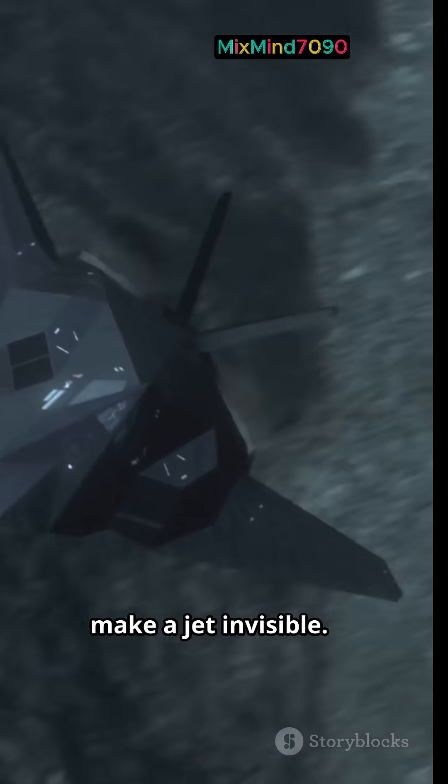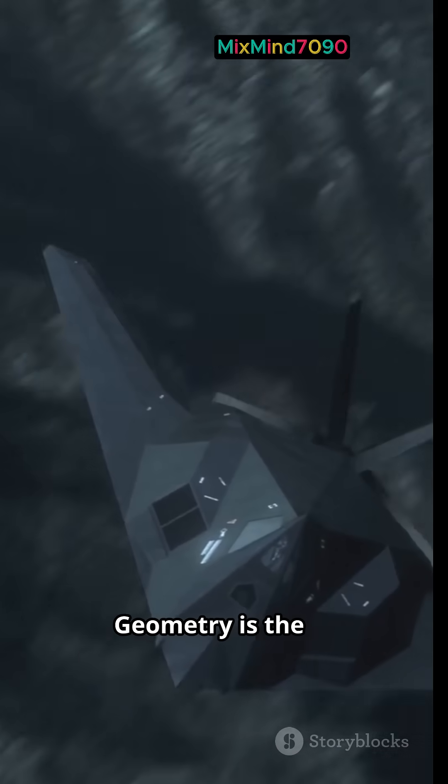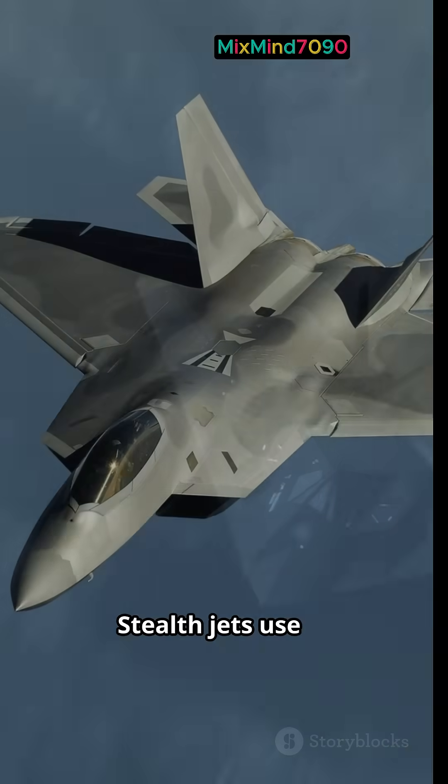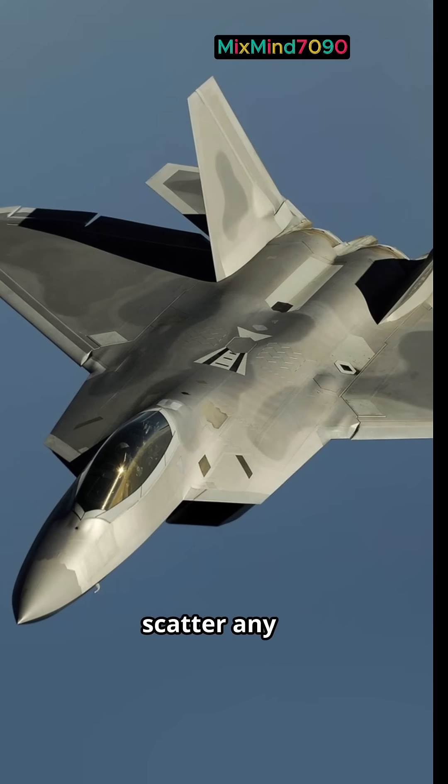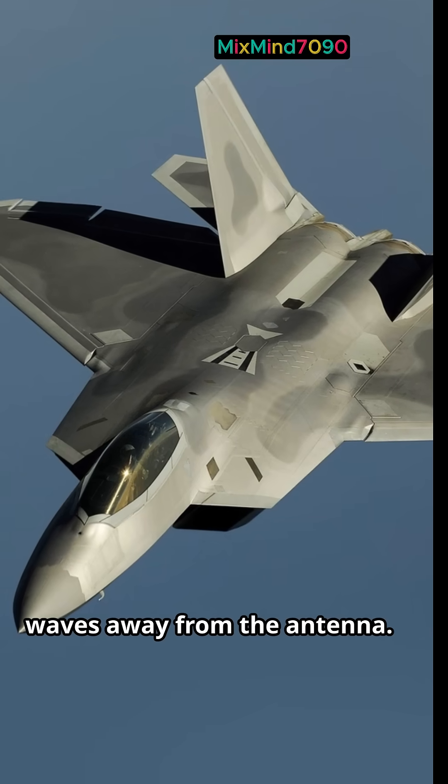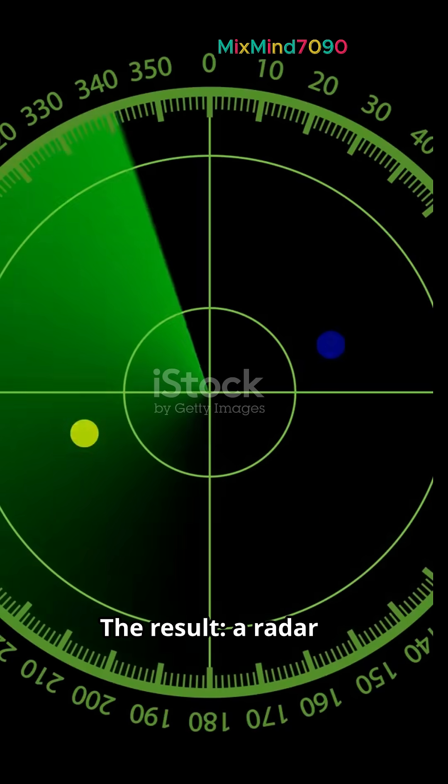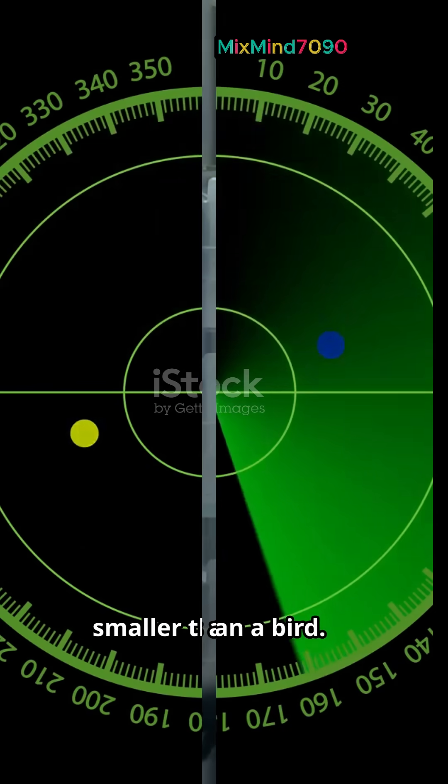But RAM alone can't make a jet invisible. Geometry is the other half of the equation. Stealth jets use flat surfaces and sharp angles to scatter any remaining radar waves away from the antenna. The result? A radar cross-section smaller than a bird.